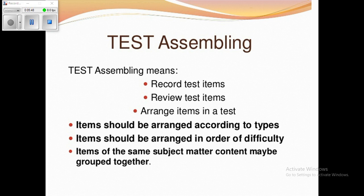No matter how carefully test items have been prepared, defects are a part of test construction. As we concentrate on the clarity and conciseness of our question, a verbal clue may slip unnoticed. As we attempt to increase an item's difficulty, we unwillingly introduce some ambiguity. As we rework an item to make the incorrect choices more plausible, the behavior called for by the item may be unintentionally modified. Reviewing the items after they have been set aside for a few days, or asking a fellow teacher to review and criticize them, is recommended.